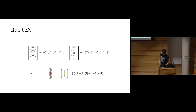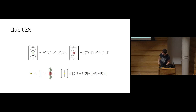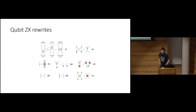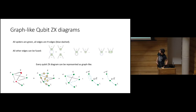Flashing through the qubit material since we all know it well: the qubit ZX calculus is generated by two spiders; Hadamard edges are drawn as blue dashed lines. The key point is that we can go graph-like, as heard in the previous talk, and this is what we want to generalise to q-trits.